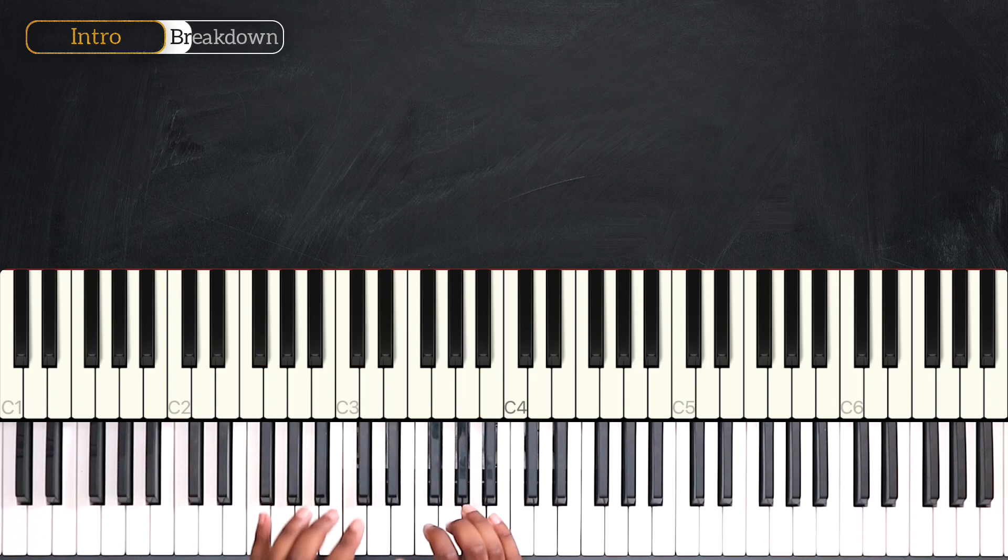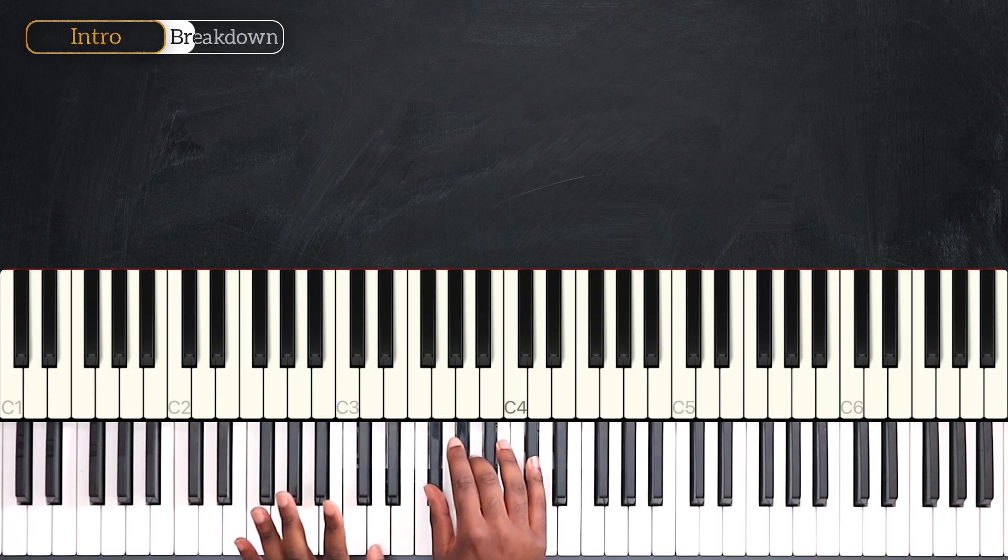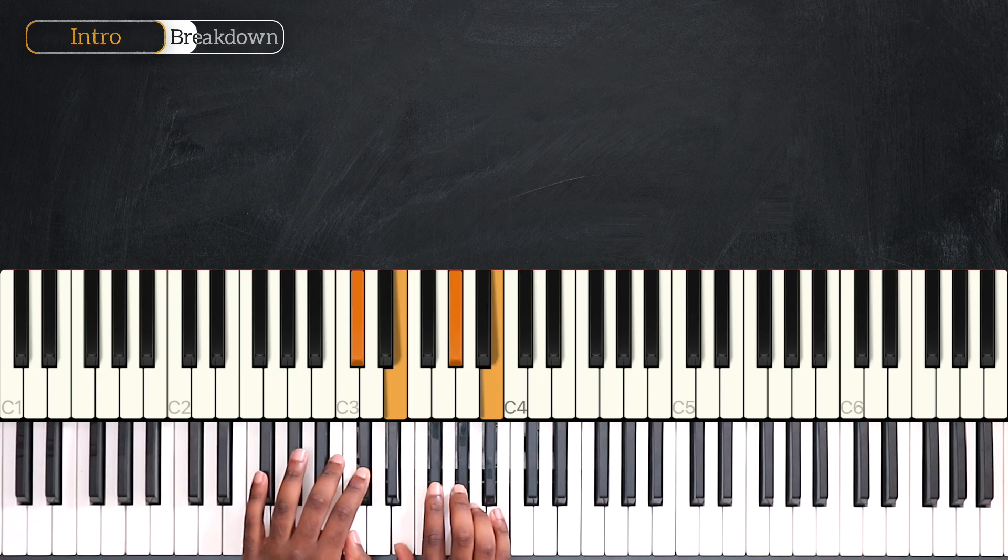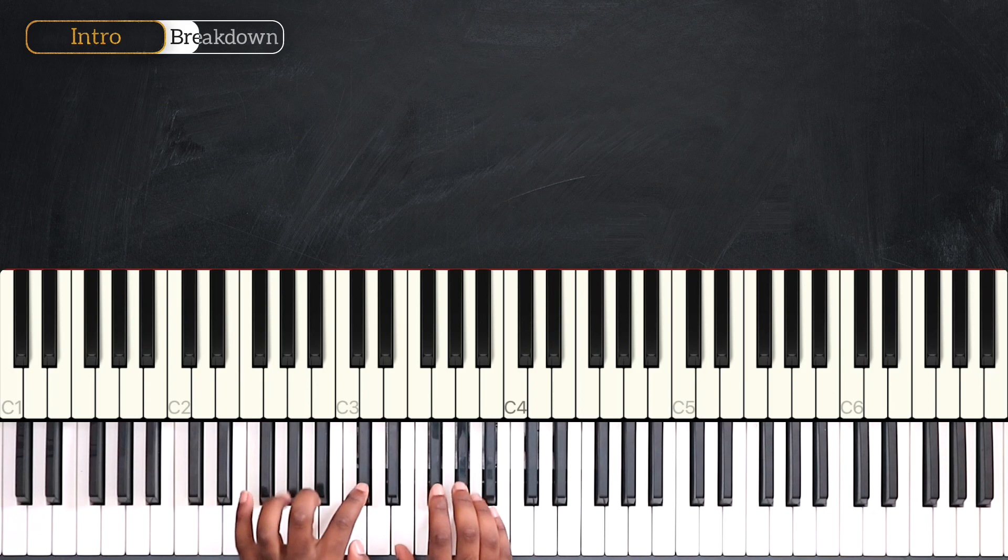So that is the first part of the intro. We have D major 7 played 3 times. Then C sharp minor 7, B minor 7, back on C sharp, ending on F sharp minor 7.